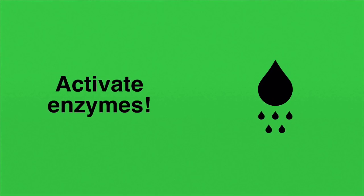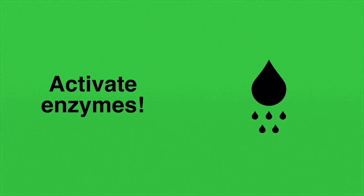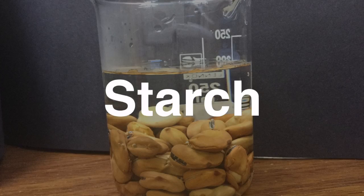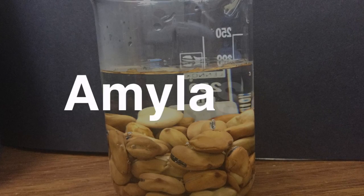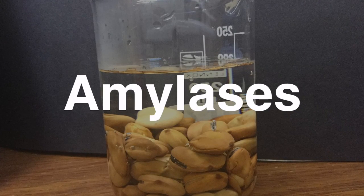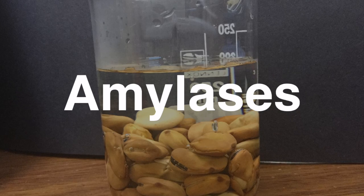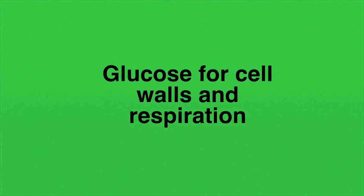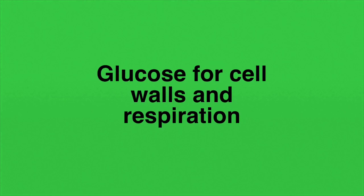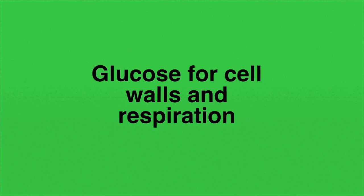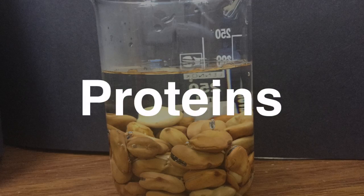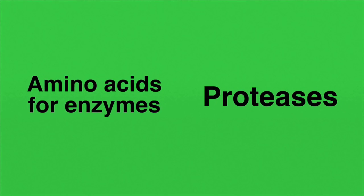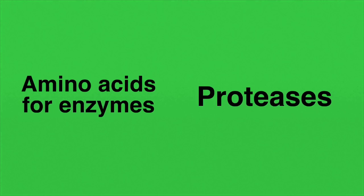Water is essential because it activates enzymes within the seed, which help in the breakdown of food reserves. Seeds contain mostly starch, and enzymes known as amylases break that starch down. The starch is first broken down into maltose, which is eventually broken down to glucose — used for cell walls and cellular respiration. Proteins in the seed are broken down into amino acids by proteases, and these are used for the formation of enzymes.